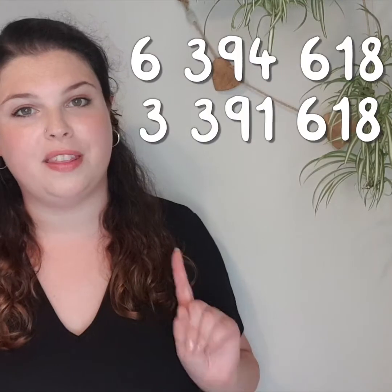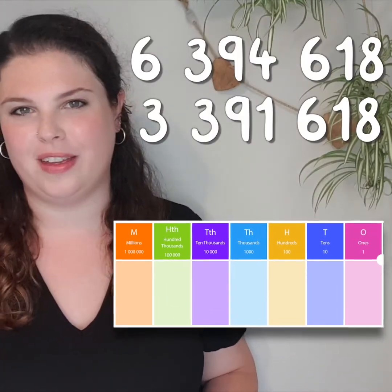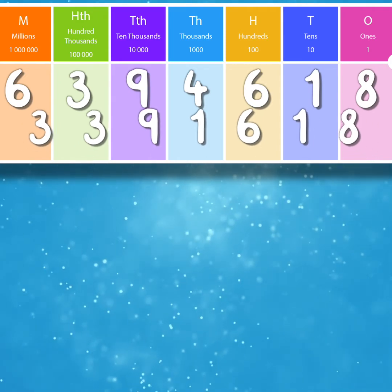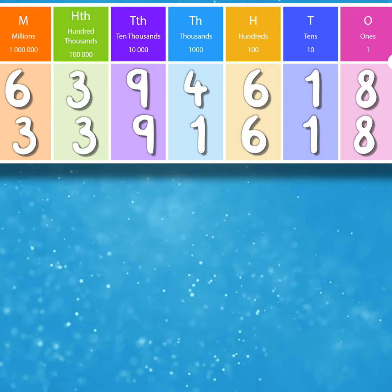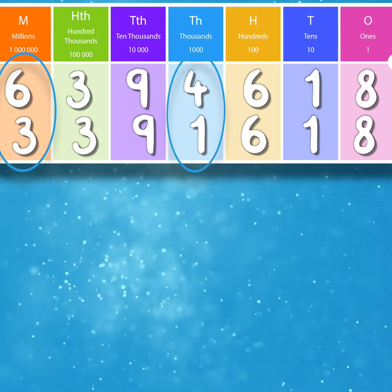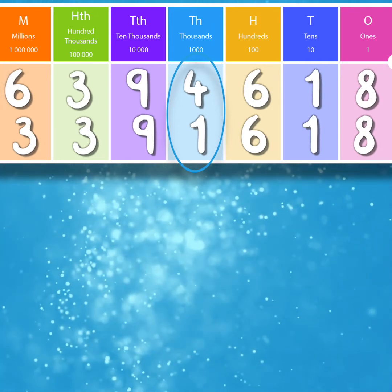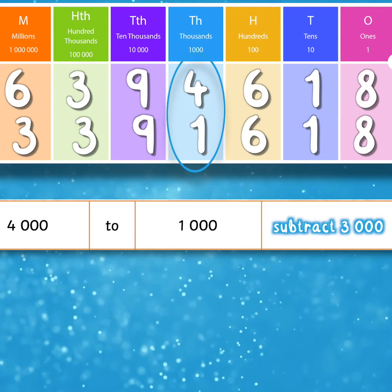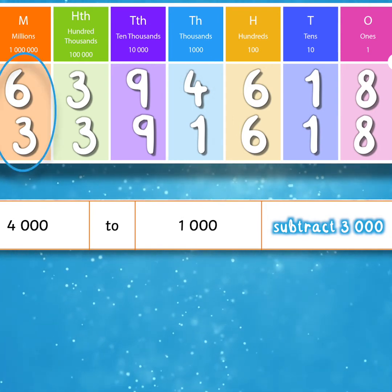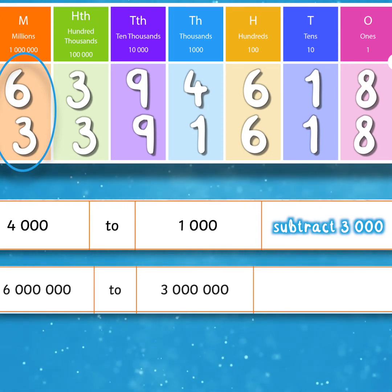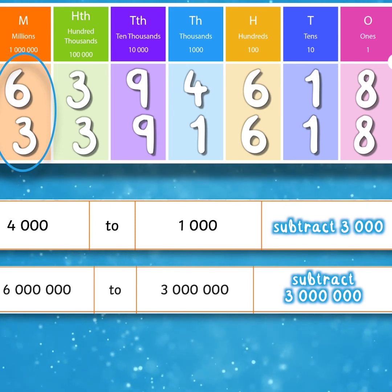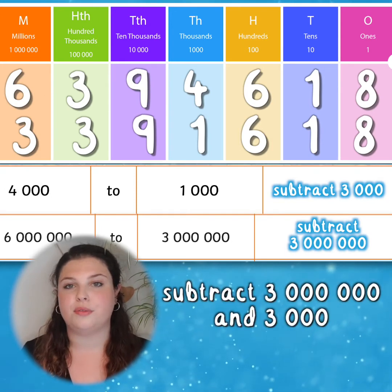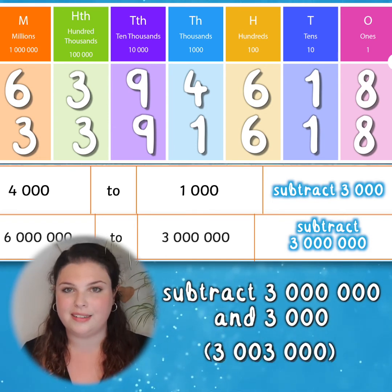Let's use place value to calculate the difference between two large numbers. Using the place value grid again can help with this. Here I have two large numbers less than 10 million: 6,394,618 and 3,391,618. We can see some digits in both numbers are the same, while others are different. The first number has a 4 in the 1000s column, while the second number has a 1 in the 1000s column, so we need to subtract 3 thousands, or 3,000, to find the difference. The millions also have different digits: the top number has 6 millions, while the bottom number has 3 millions. Therefore, we need to subtract 3 millions, or 3,000,000, to find the difference. You could also use counters to help calculate the difference. So to explain how to calculate the difference between these two large numbers, I would say to subtract 3 millions and 3 thousands, or subtract 3 million and 3 thousand.